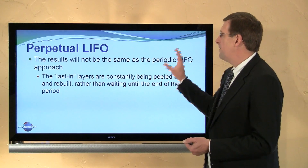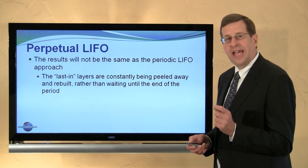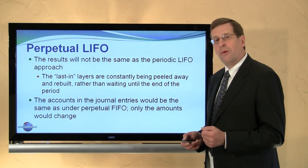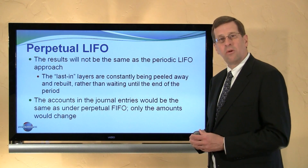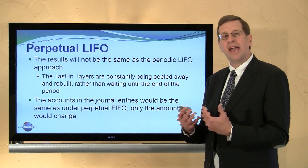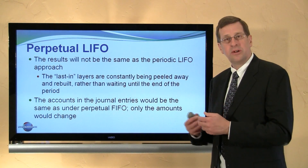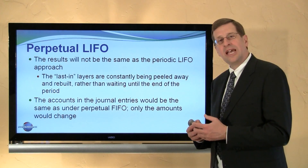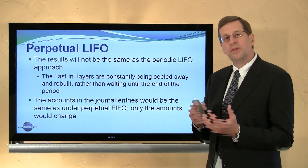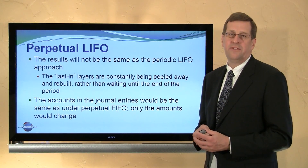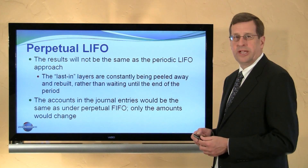Perpetual LIFO is simply different in terms of its outcome compared to the periodic LIFO method. However, the journal entries and accounts involved are the same as under the perpetual FIFO method. As we buy inventory, we debit inventory and credit the consideration paid — cash or accounts payable. As we sell goods, in addition to recording the sale, we debit cost of goods sold and credit inventory.